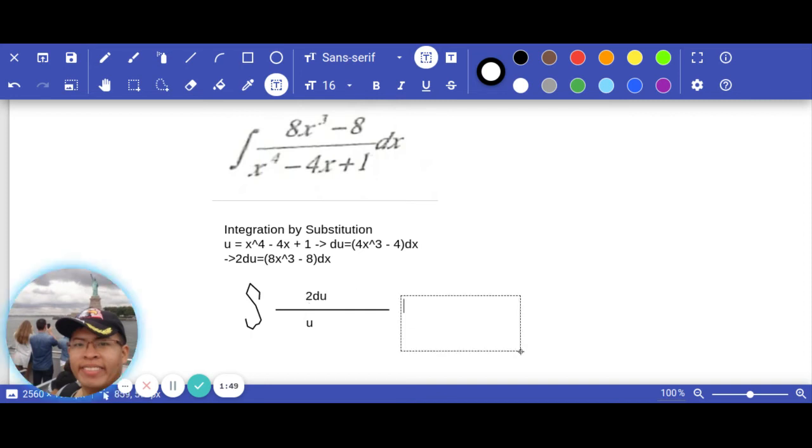So in this situation we get 2 ln of the absolute value of u plus c.